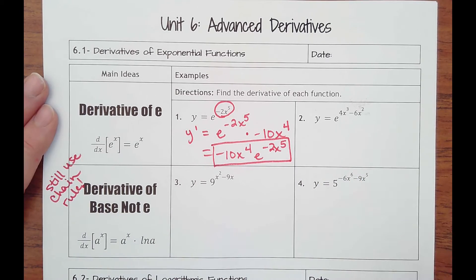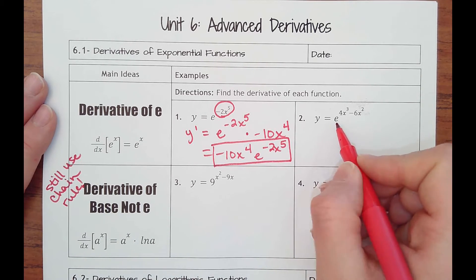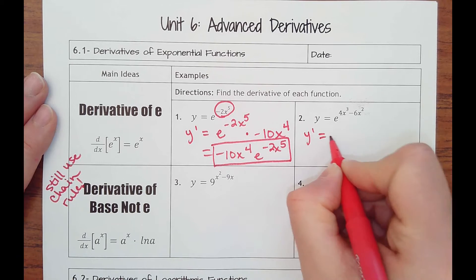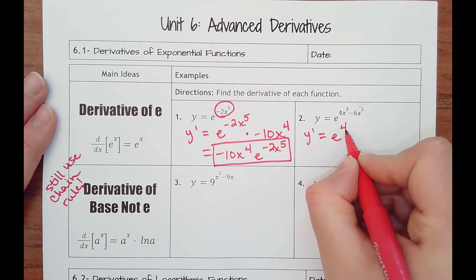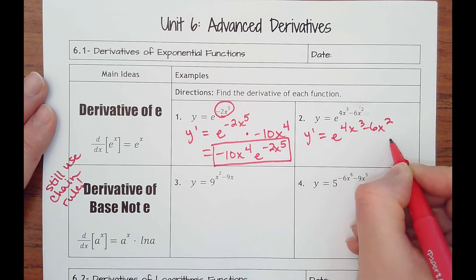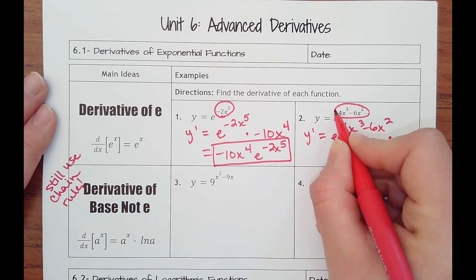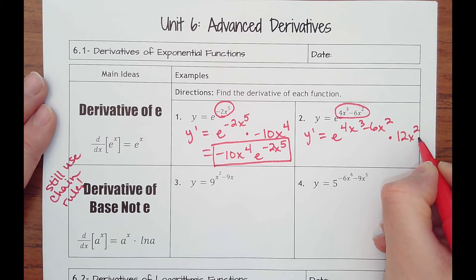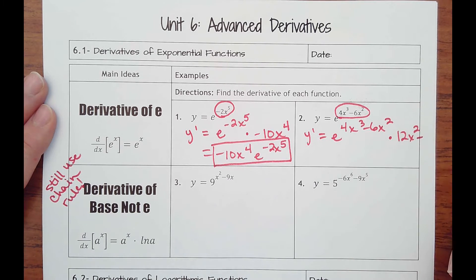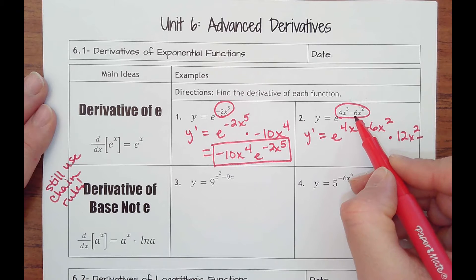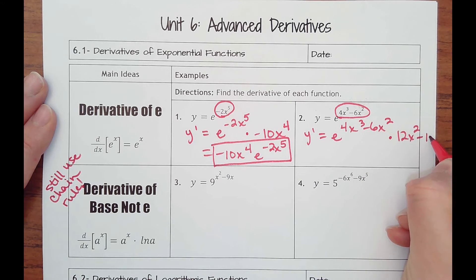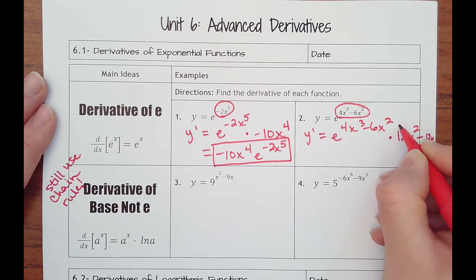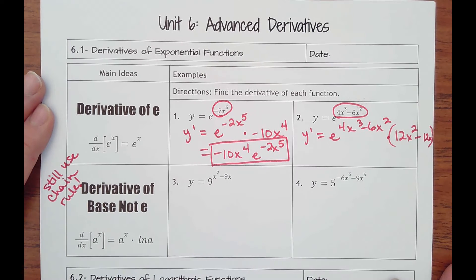Okay, it's that simple. Number two, another one with e. So to find the derivative, derivative of e is itself, so I'd write it again. Use chain rule. Take the derivative of the power. That would be 12x squared minus 12x. I should probably put that in parentheses though, so it knows it goes together. And I would just leave it like that.